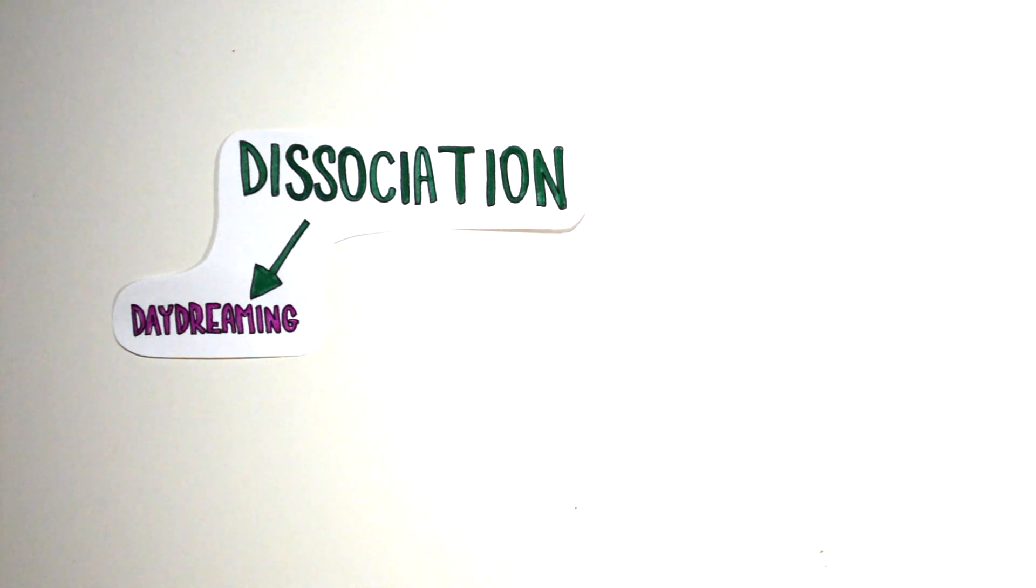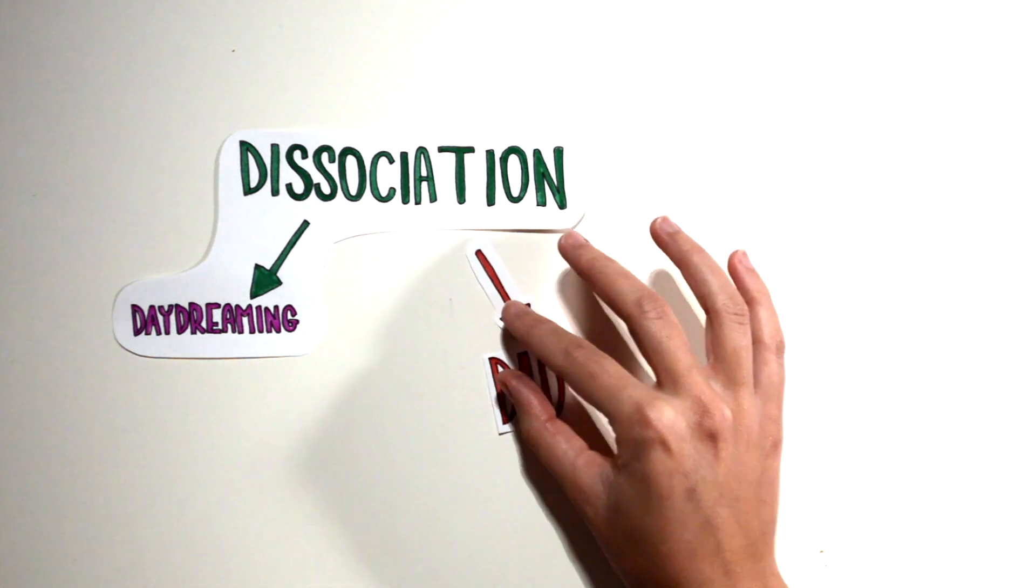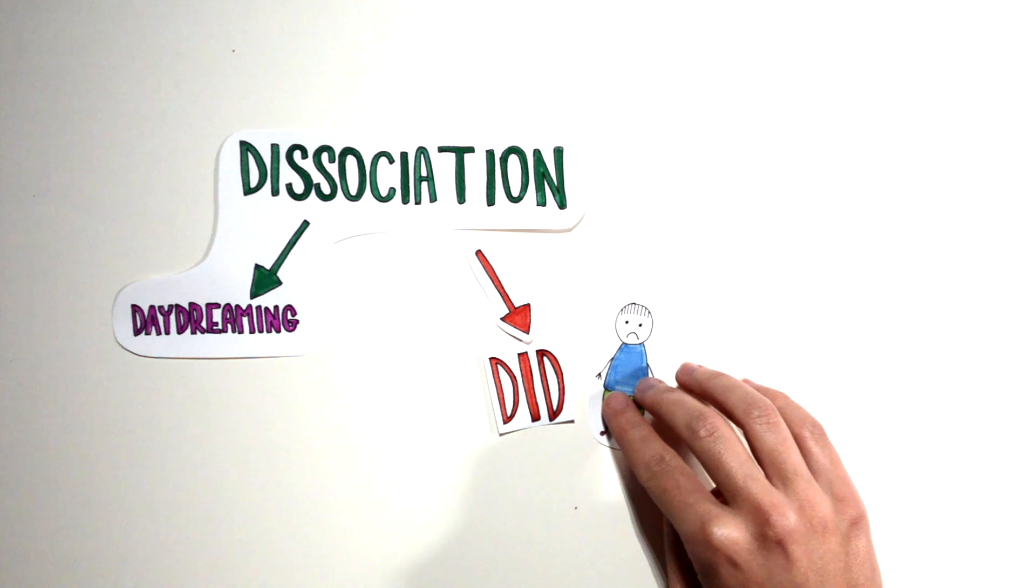Dissociation is characterized by a detachment from reality, and is something that everybody could experience, for example, daydreaming. In the case of Jacob, we speak about pathological dissociation.